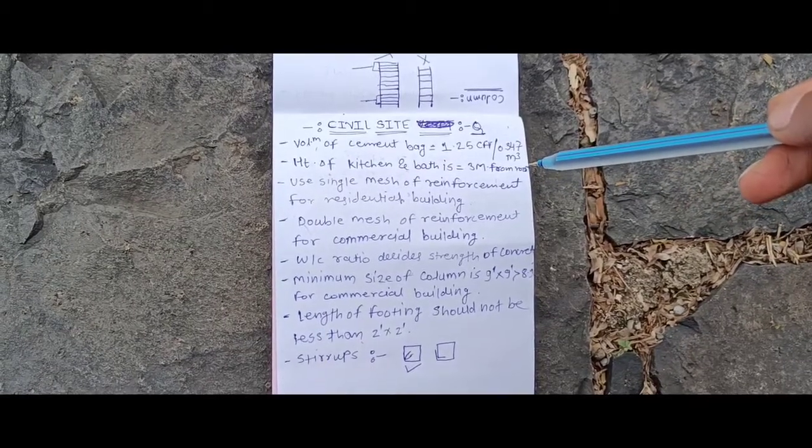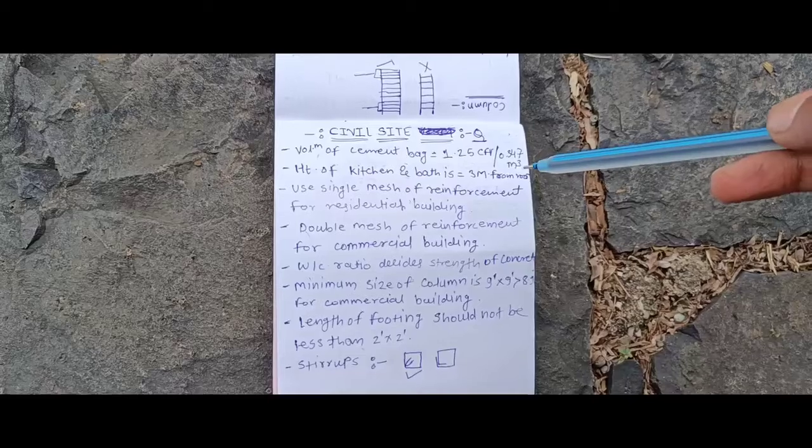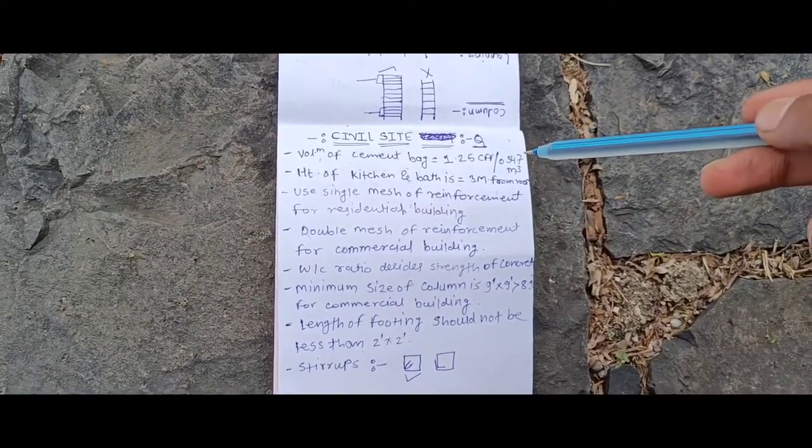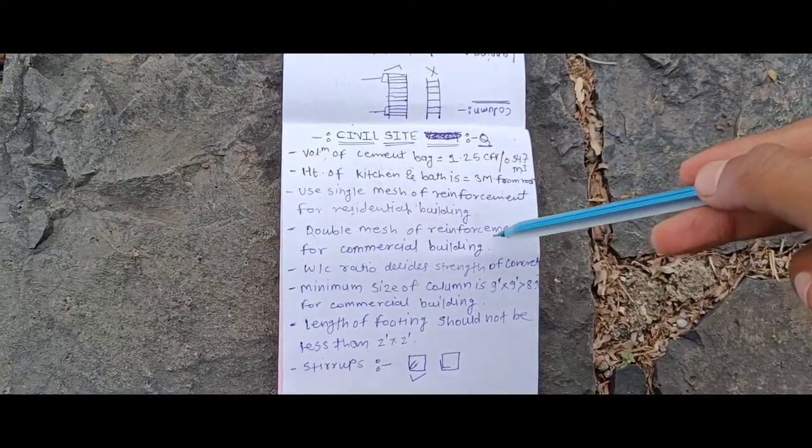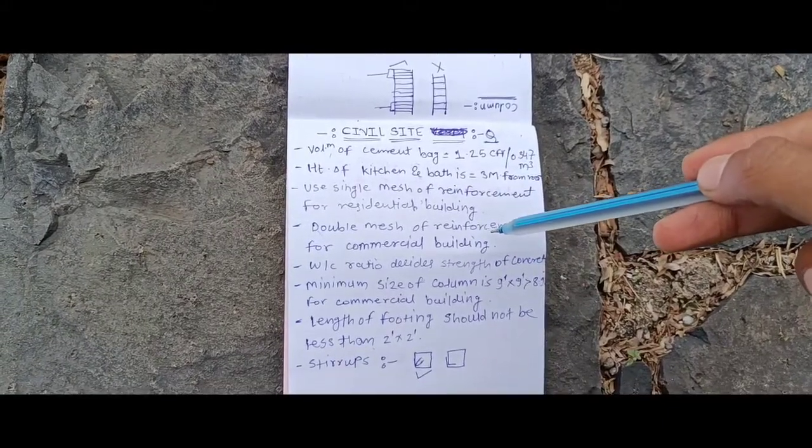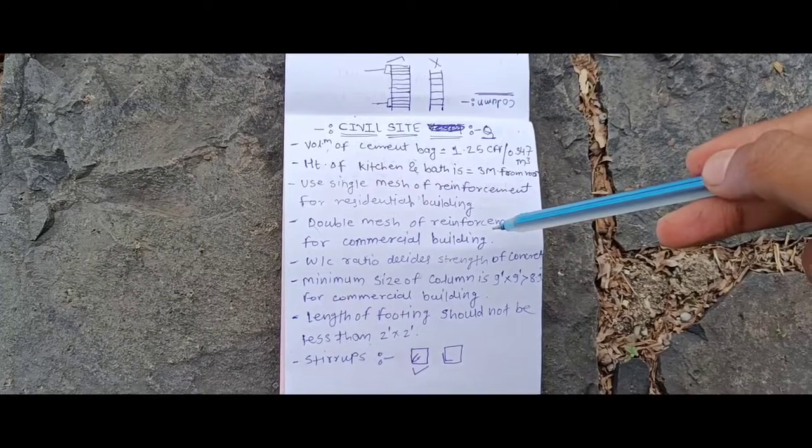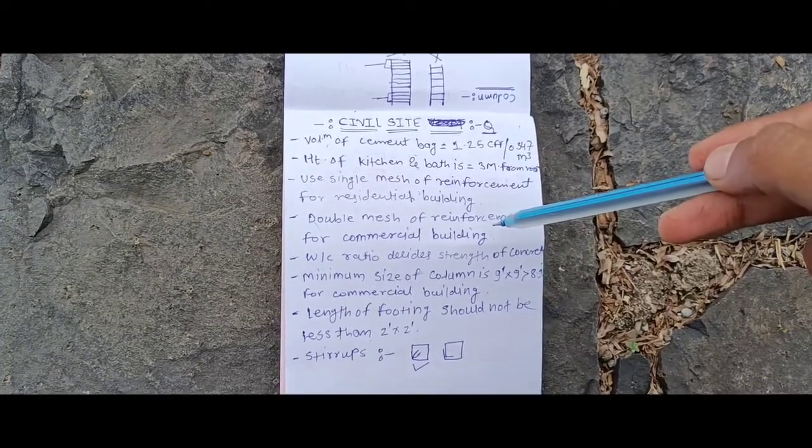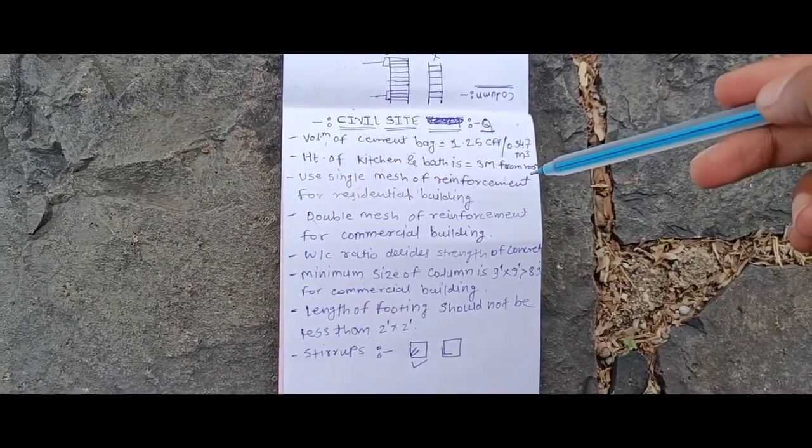For mesh reinforcement, residential buildings use single mesh and commercial buildings use double mesh. Water cement ratio of concrete is decided based on the specific requirements.